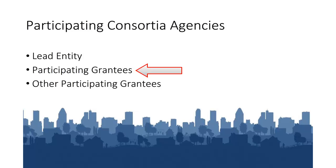All other governments participating in the consortium are referred to as consortium members. Some of these members receive CDBG or ESG directly from HUD. These members are participating grantees. Participating grantees are unique in that they will contribute to the development of the plan for the consortium and will also complete their own plan for the grants they receive directly from HUD.